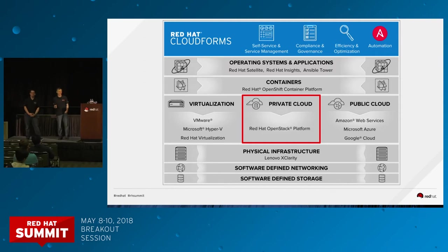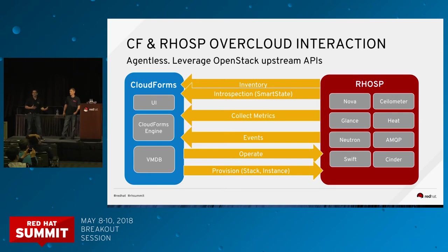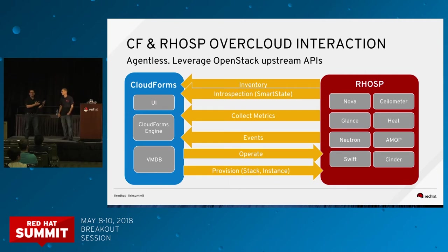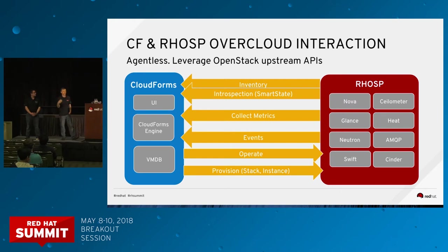Today we're going to focus on CloudForms interacting with OpenStack in particular, but a lot of the capabilities you'll see from CloudForms can be applied to these other providers as well. CloudForms is leveraging the same APIs — it talks directly to Ceilometer, to Nova, to Neutron, to pull in information about compute instances, software-defined networking, and software-defined storage. It doesn't require any special configurations on the OpenStack side or any agents installed on hypervisors. It's just talking to the APIs as you would through the Horizon interface.